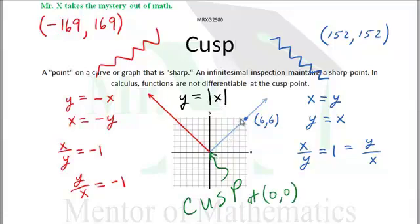This line eventually goes to the point (152, 152). When X equals 152, Y will equal 152. The absolute value of this is this.